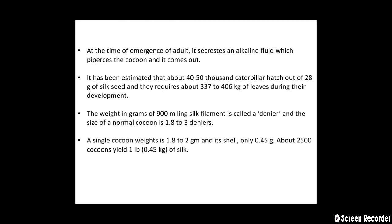It has been estimated that about 40,000 to 50,000 caterpillars hatch out of 20 grams of silk seed and they require about 337 to 406 kg of leaves during their development. The weight in grams of 9,000 meters of silk filament is called a denier, and the size of a normal cocoon is 1.823 deniers. A single cocoon weighs 1.822 grams and its shell weighs only 0.45 grams. About 2,500 cocoons yield 1 lb or 0.25 kg of silk.